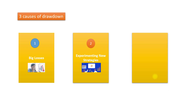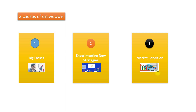The third possible reason for drawdown is market conditions. Market conditions may have changed, so the strategies you devised that used to work earlier may no longer be working in the current market. These are the three main causes of drawdown in trading.